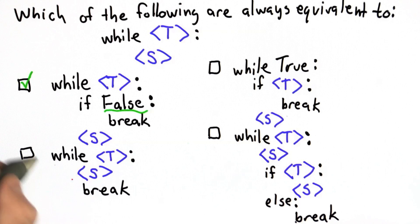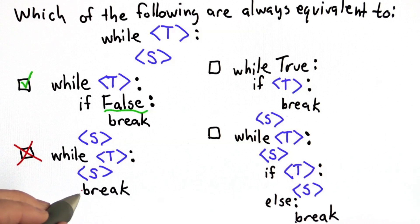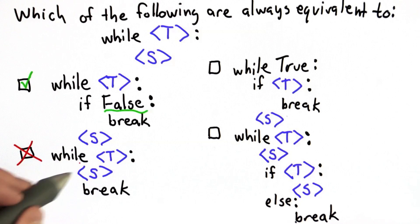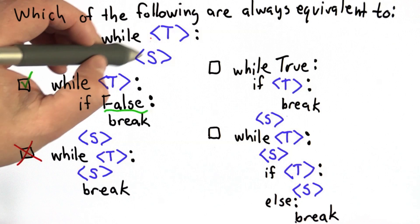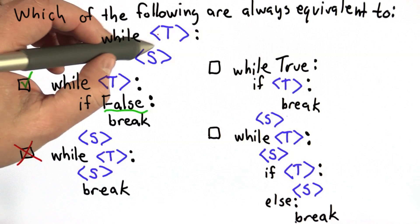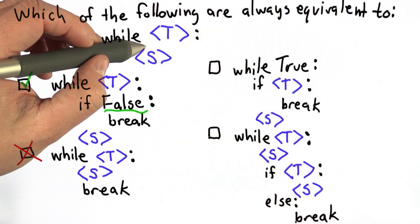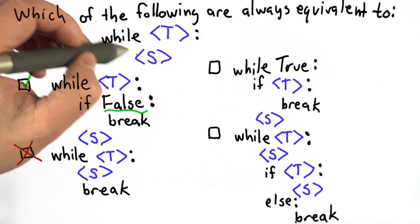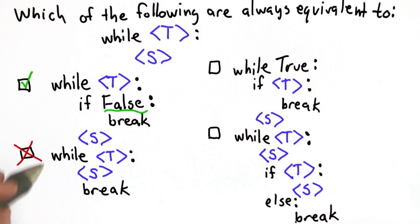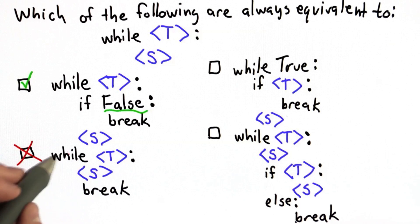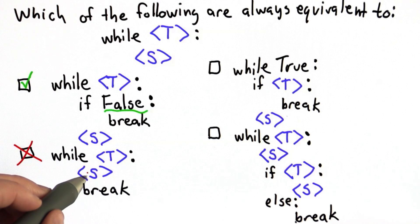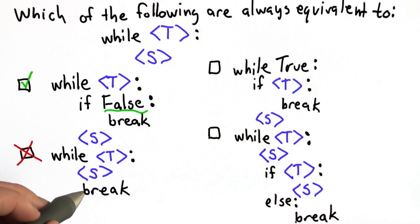The second one is not equivalent, and the reason for that is the break will stop the loop. So if the loop would execute more than once — if we go through the loop twice — in this version, we can only ever go through the statement once, since after we go through the statement once, we reach the break, and then we're done.